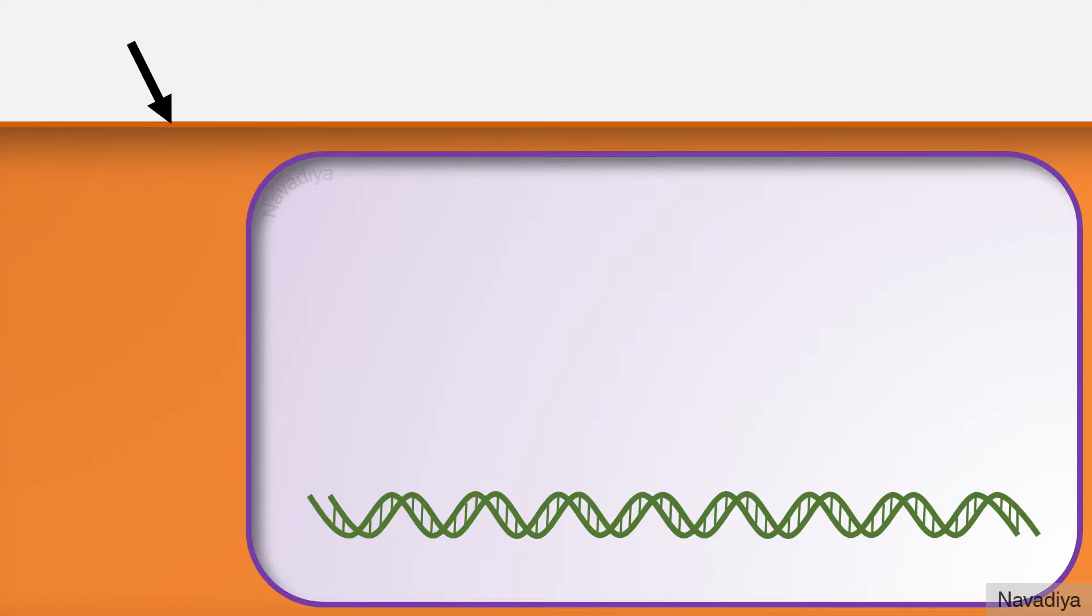So as usual we have the cell, it is its nucleus and this is a gene. And this is thyroid hormone response element on promoter region of this gene.